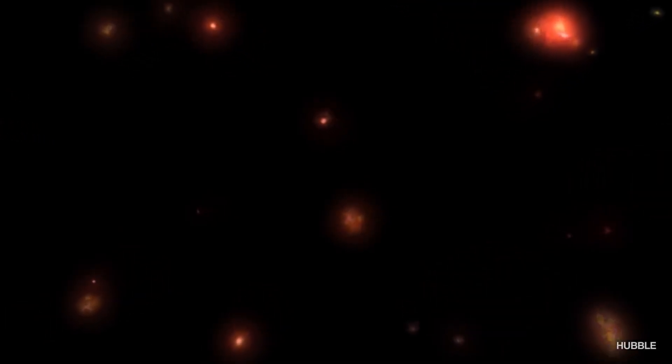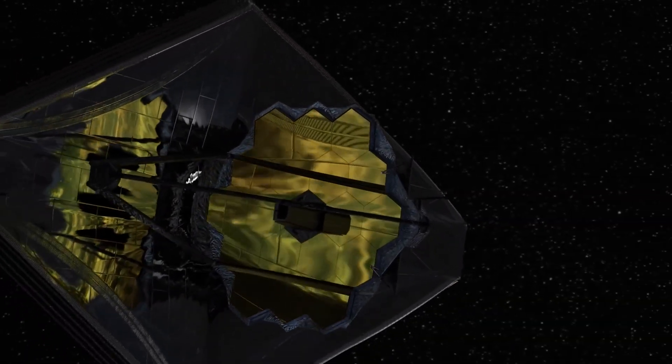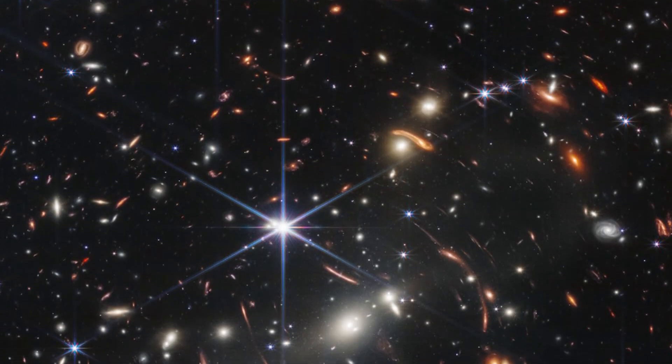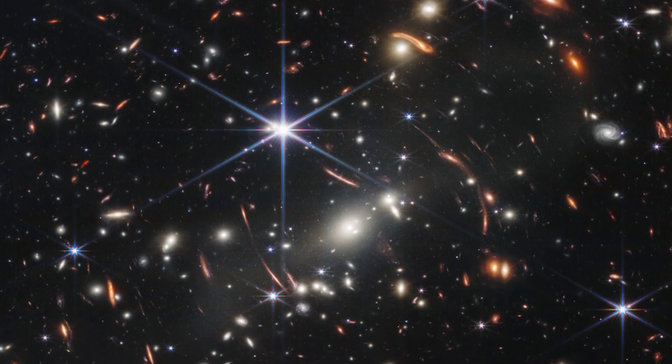Today, we can officially announce that NASA's James Webb Space Telescope has produced the deepest and sharpest infrared image of the distant universe to date. Known as Webb's first deep field, this image of the galaxy cluster SMACS-0723 is overflowing with detail.